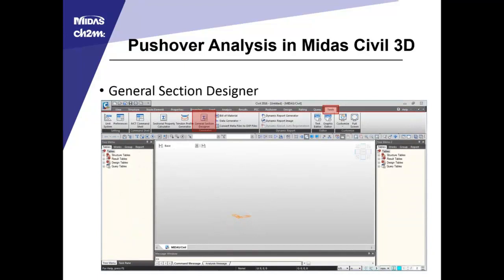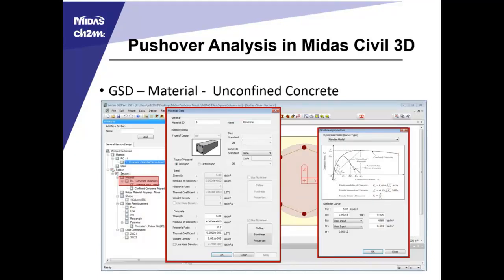To get to the General Section Designer, it's under the Tools main menu. That's in a similar spot to the section property calculator and the tendon profile generator, and will bring up a secondary program. In that program, the first thing to do is define a material. You can choose a concrete standard from various dropdowns and choose a concrete strength, or choose no standard and input the data yourself. Down on the bottom right of the material data window is the nonlinear property window. One thing to note: although we're defining the unconfined concrete, the model we choose for its nonlinear property will be the default model used for the confined concrete — so it's important to choose a consistent model between those two.